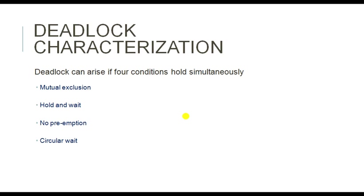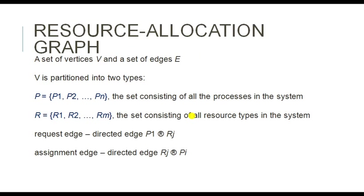Circular wait refers to the example given earlier. If there are multiple processes — two, three, four — where one process is holding one resource and waiting for another resource which is occupied by some other process, forming a chain, that is called circular wait. If there is a circular wait, there will definitely be a deadlock. If any of these conditions or all conditions occur in a program, there will definitely be a deadlock.